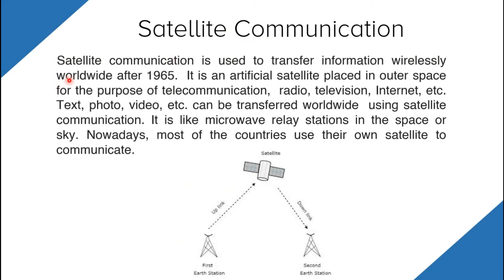Satellite communication is used to transfer information wirelessly worldwide. It is an artificial satellite placed in outer space for the purpose of telecommunication, radio, television, or internet. Text, photos, video, etc. can be transferred worldwide using satellite communication — it is like a microwave relay station in space. An earth station sends signals up to the satellite (uplink), the satellite monitors and routes the data signals, then transmits them down to a second earth station (downlink), which provides the digital output.